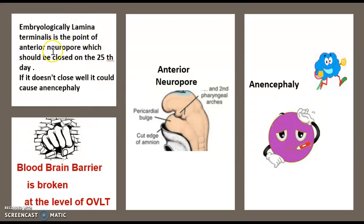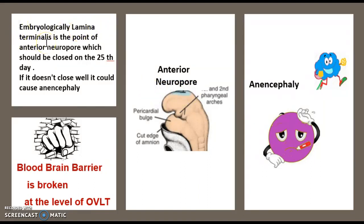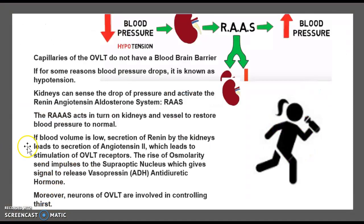Embryologically speaking, the lamina terminalis is a point of the anterior neuropore, which should be closed on the 25th day. When you have an embryo developing through its stages, on day 25 you have an opening called the anterior neuropore — it should close. Once it closes, it starts to give rise to the lamina terminalis. If it does not close, it leads to a condition called anencephaly, in which the brain does not develop.